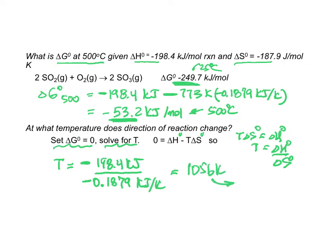We normally put it in terms of degrees centigrade. So there's our numerical answer of 782°C. But what does that tell us? It says if I am below 782 degrees centigrade the reaction as written is spontaneous.